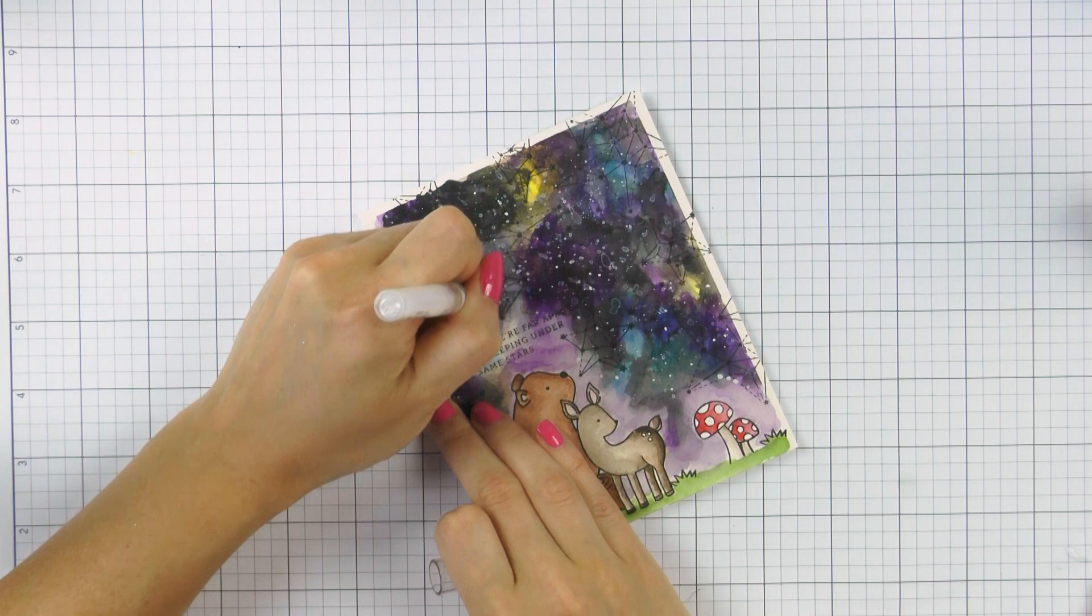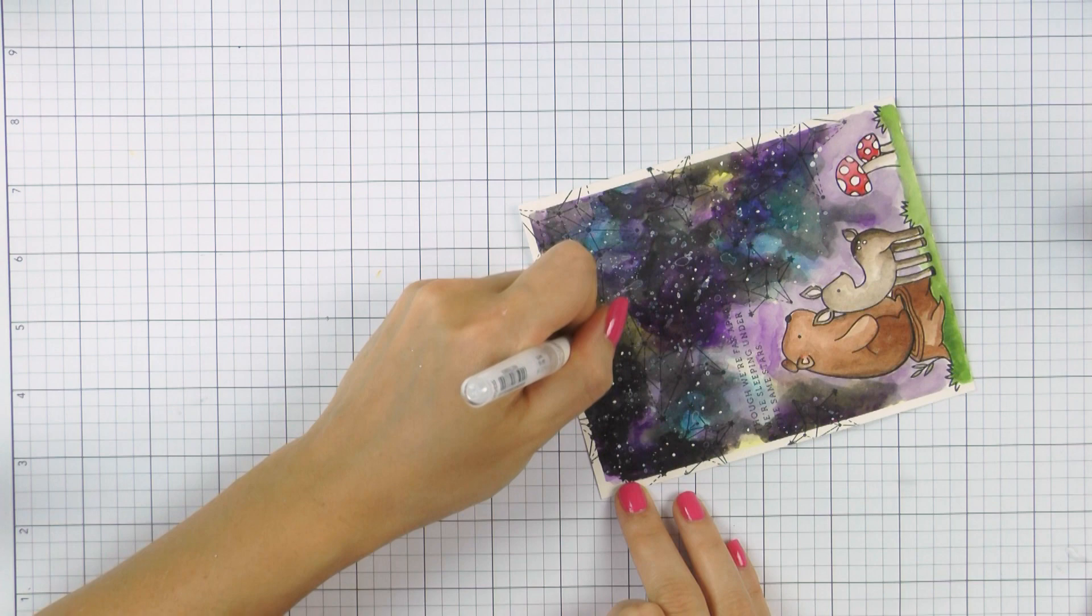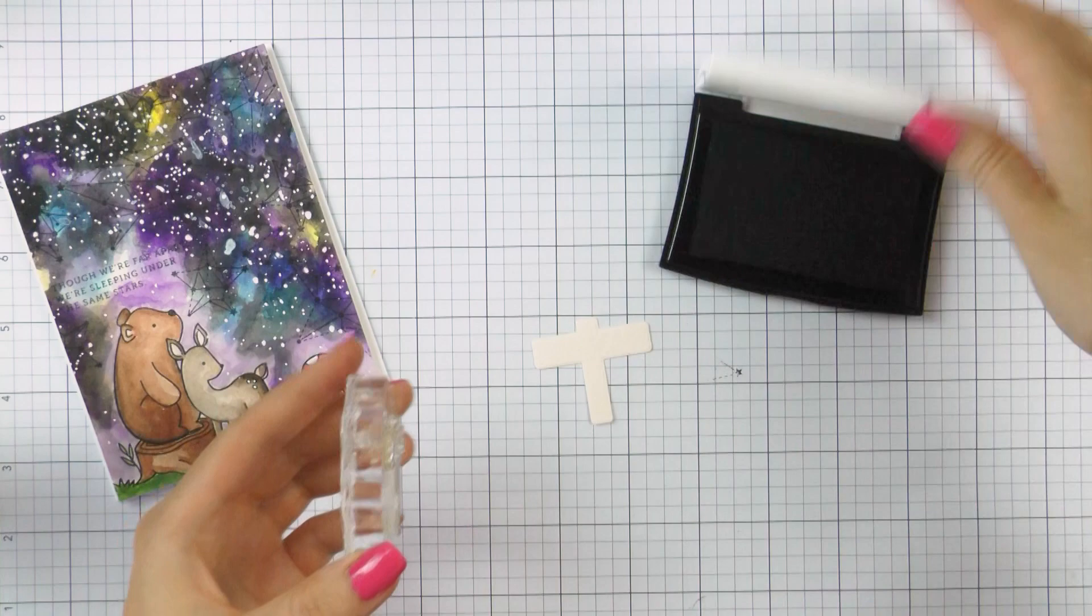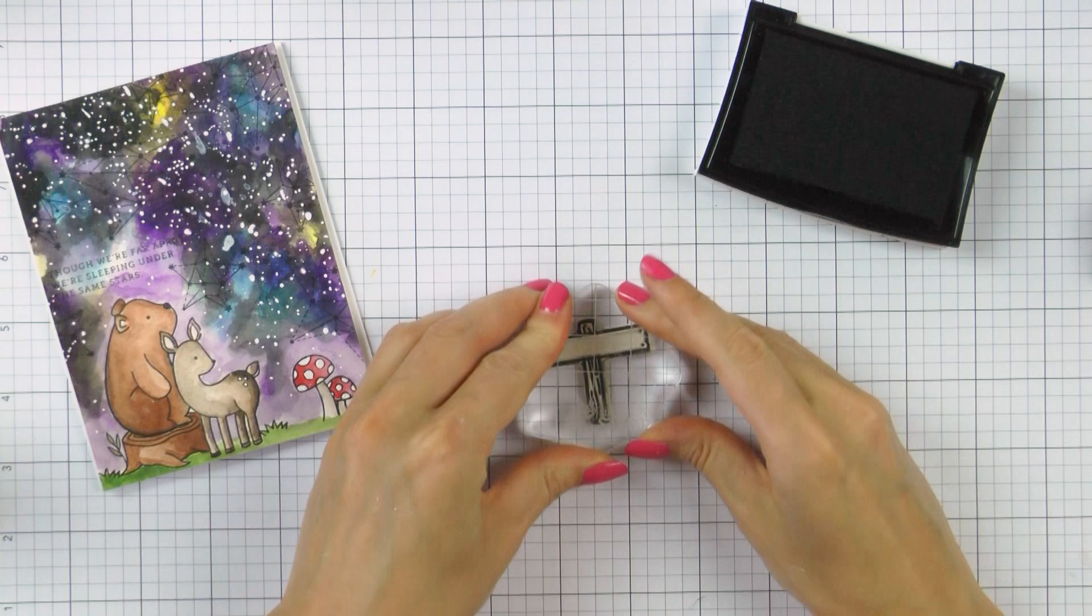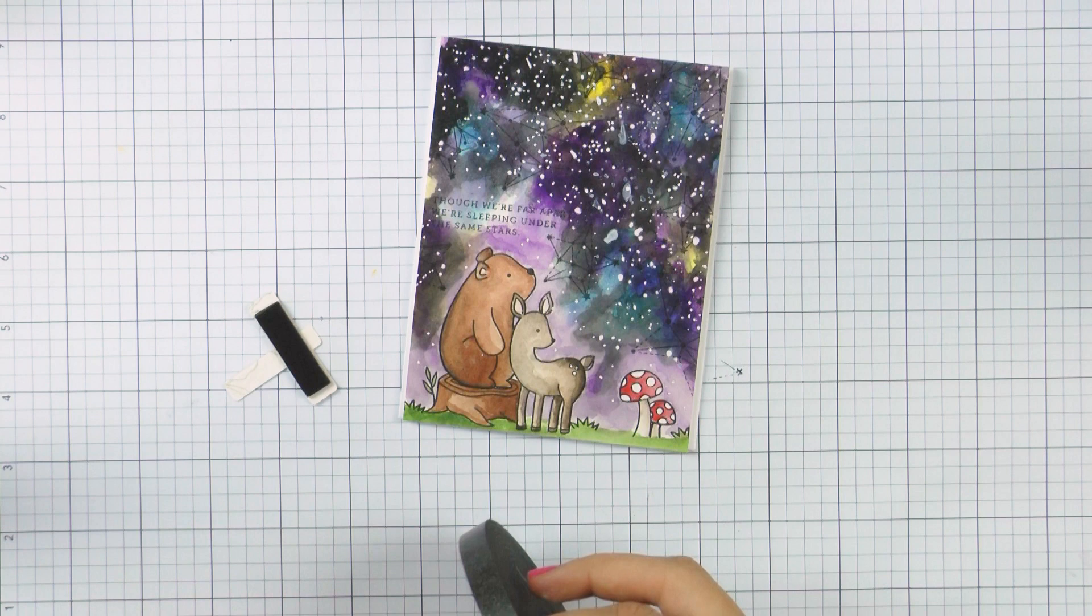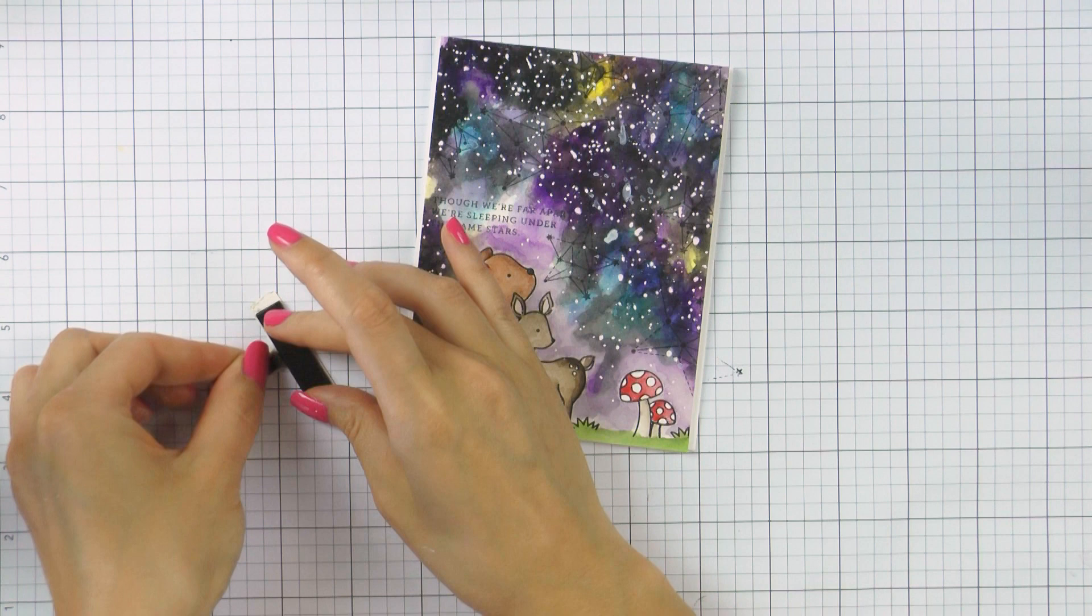I die cut and stamped a wooden sign onto the same Arches Hot Press watercolor paper, added a missing you sentiment and watercolored it to match the rest of my scene. I have also foam mounted my watercolor panel onto an A2 top folding card base. I have trimmed the panel to be four by five and a half inches and foam mounted the stamped and die cut sign on top. I used a black foam tape to make sure it wouldn't be visible on the card.